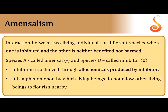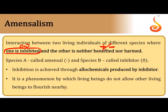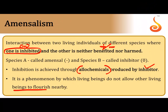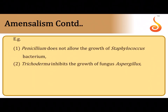Amensalism is an interaction where one species is inhibited in a negative way while the other is neutral — neither benefited nor harmed. The species that harms the other releases chemicals called allelochemicals. The harming species is called the inhibitor. For example, Penicillium fungus releases a chemical called penicillin which kills bacteria — the fungus is the inhibitor releasing allelochemicals that destroy the other organism.